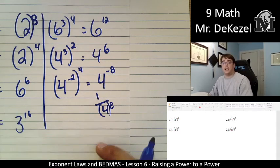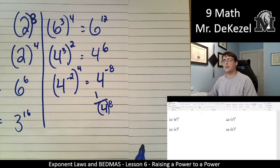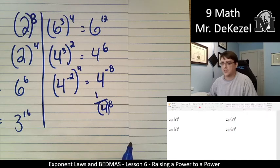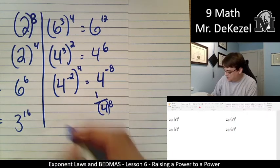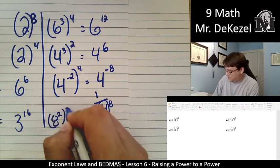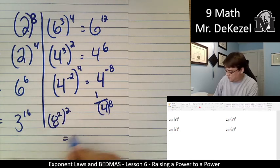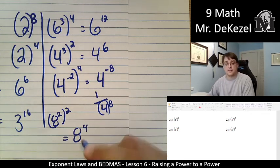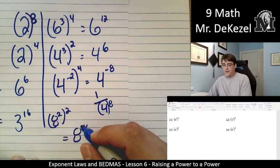So if you end up with negative exponents, and I think you might, at least you will in future lessons, we always take it and we put it on the bottom. Let's do our last one. 8 squared to the power of 2. 2 times 2 is 4. So it ends up being 8 to the power of 4.